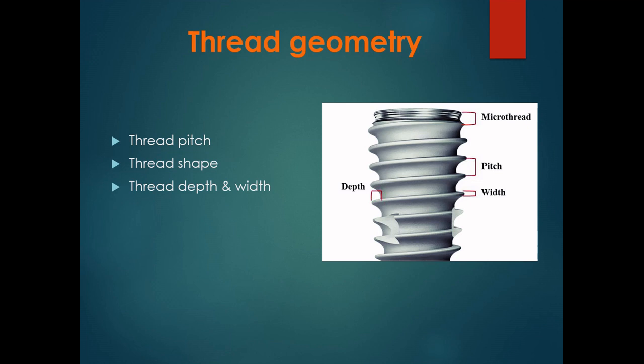Coming to thread pitch: thread pitch is the number of threads per unit length. Smaller the pitch, more threads are present on the implant body for a given unit length, and thus greater is the surface area per unit length. So if we have to increase the functional surface area, we can decrease the thread pitch.